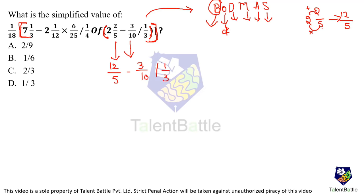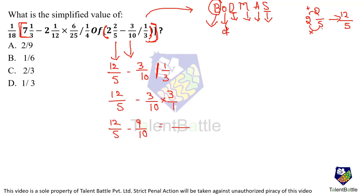So I can write this term as 12/5 minus (3/10) divided by (1/3). To solve this small bracket again I follow BODMAS — division first, then subtraction. Solving the division: (3/10) ÷ (1/3) = 9/10. So we have 12/5 minus 9/10. Taking LCM of 10: 24/10 minus 9/10 = 15/10 = 3/2. So the entire bracket value is 3/2.